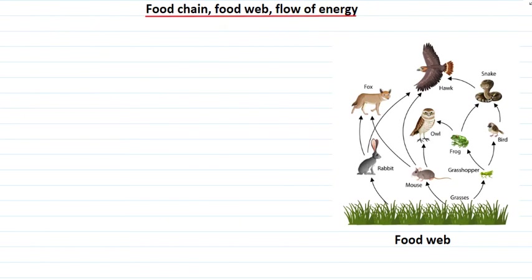Before understanding food chain, food web and flow of energy, let's understand how energy enters into an ecosystem. We know that there is a process called photosynthesis. Energy enters an ecosystem through this process — that is, through photosynthesis, energy enters into an ecosystem.